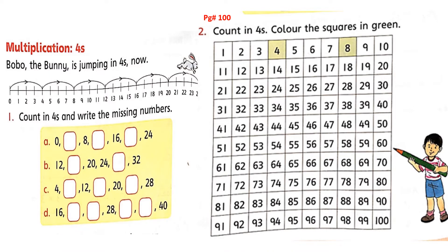Students, now open book page number 100. Question number 1 and 2 — I am going to explain. We will solve this question with the help of the number line, and here Bobo will help us. Bobo will stand first at number 0, then skip the next 3 numbers and land at the 4th number. What is written here? 4 — the answer is 4. Now start jumping from number 4, count 4 more, skip next 3 numbers — 5, 6, 7. Where will it go? Yes, number 8. The answer 8 is already written.